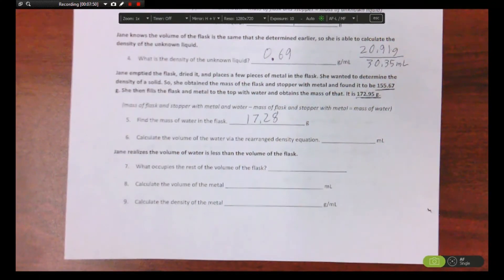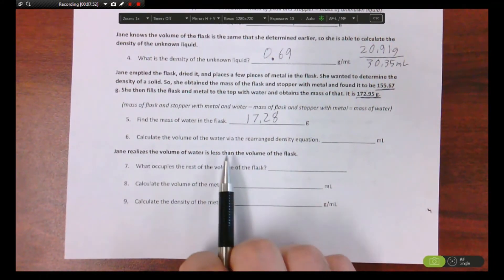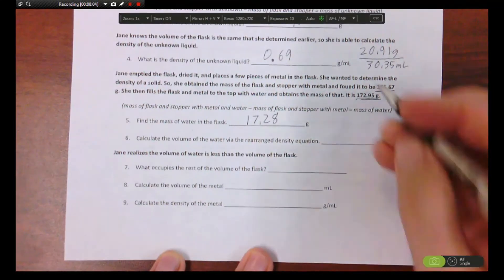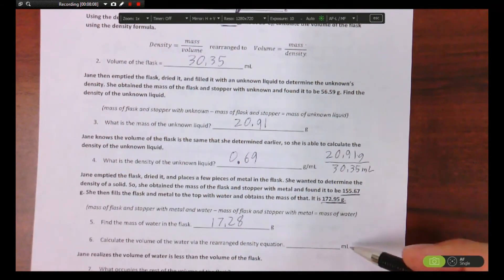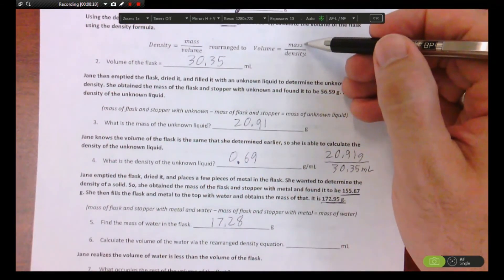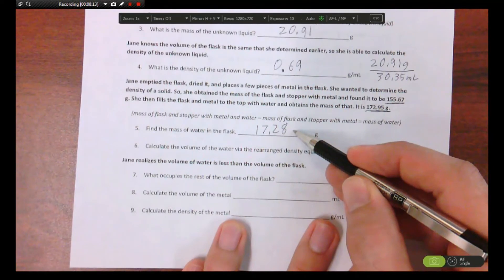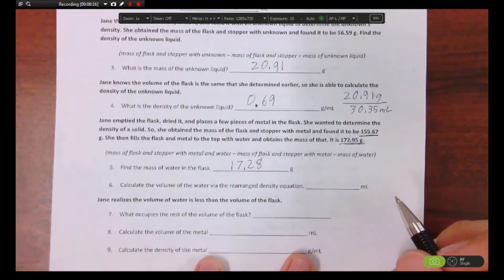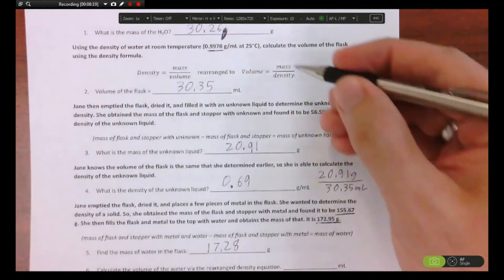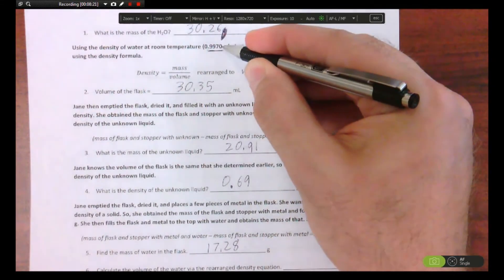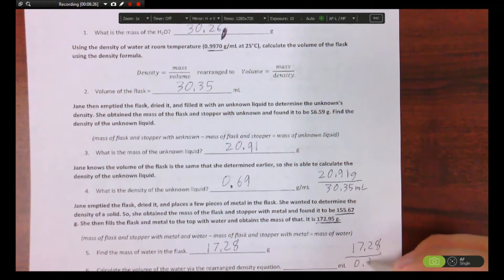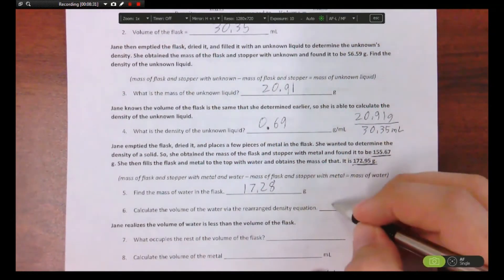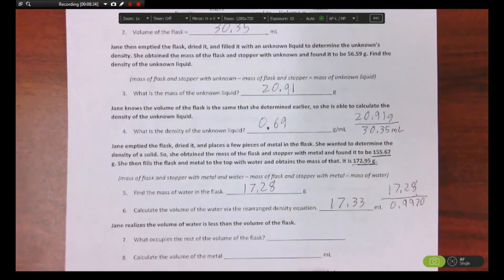Number six, calculate the volume of the water via the rearranged density equation. Okay, so the rearranged density equation they're talking about is up here. You're doing the same process over again. You need the mass of the water which you just found. What's the density of water? Well, you did that way up here, boom, right there. So typically 17.28 divided by the 0.9970, which should give you around 17.33 milliliters.